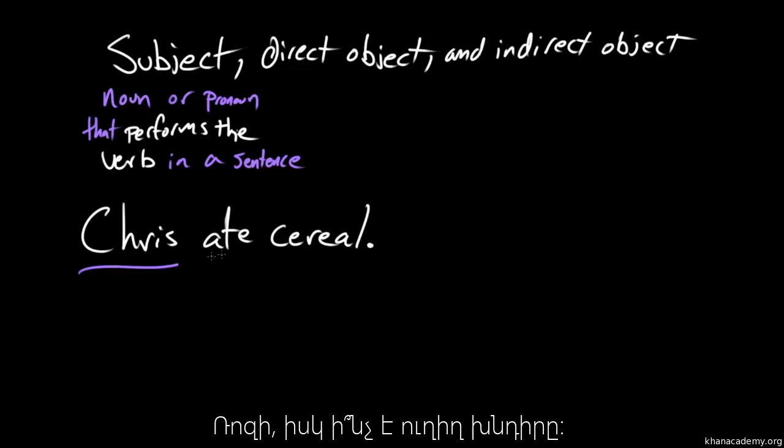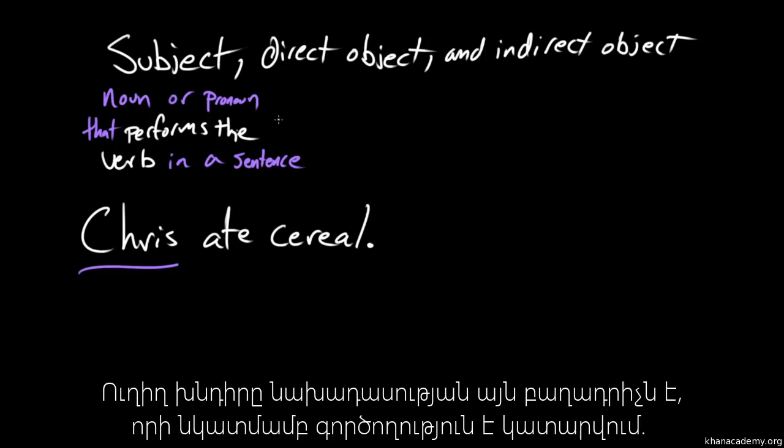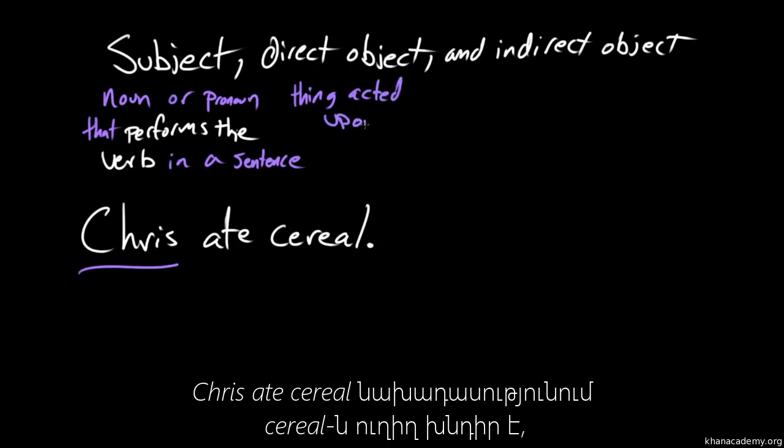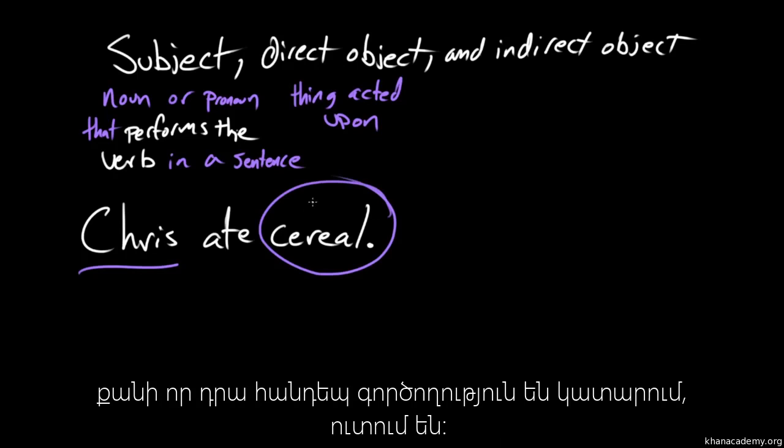Rosie, what is a direct object? So a direct object is the main thing in the sentence that is being acted upon. So in this sentence, Chris ate cereal, cereal would be the direct object because it's the thing being acted upon, it's being eaten.